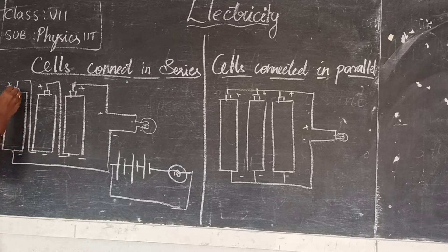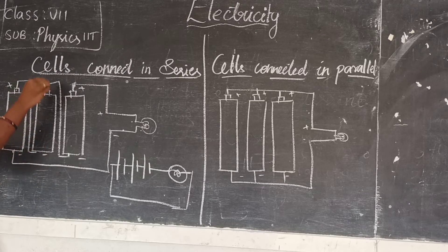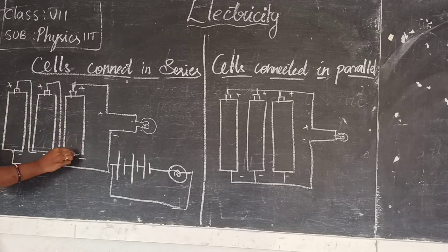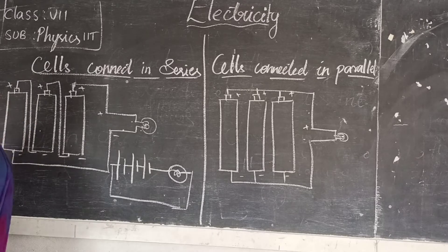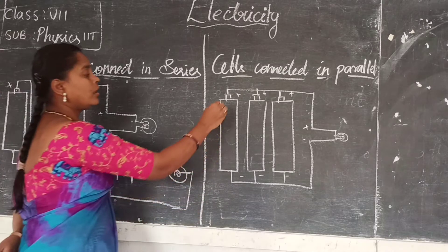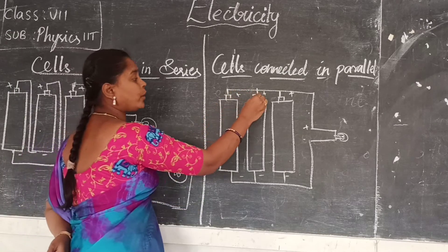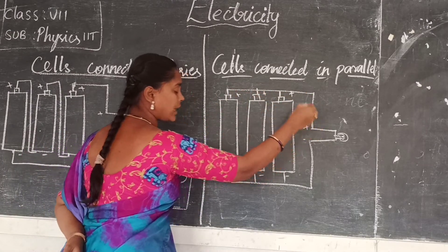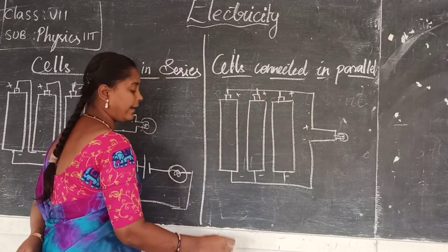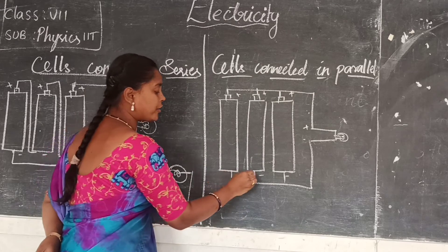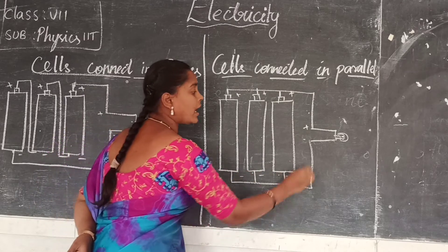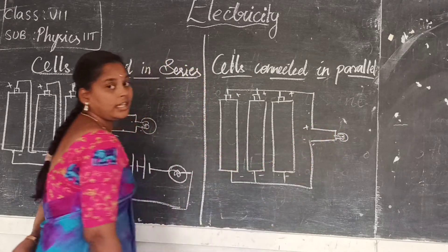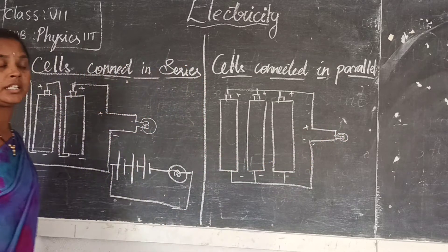In series: positive to negative, positive to negative. Whereas in parallel, all the positive terminals are connected to one side and all the negative terminals are connected to the other side. That is the main difference.